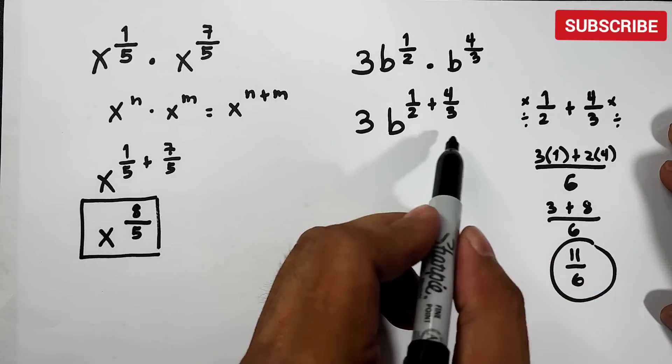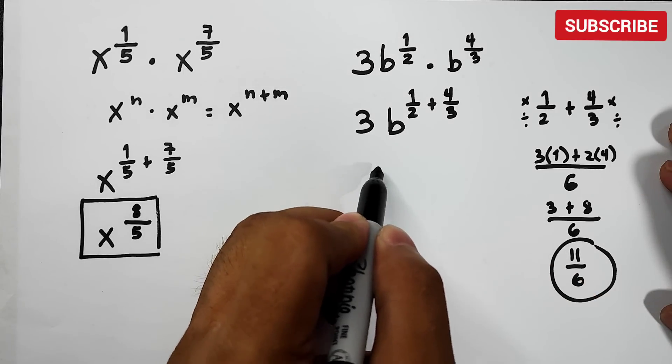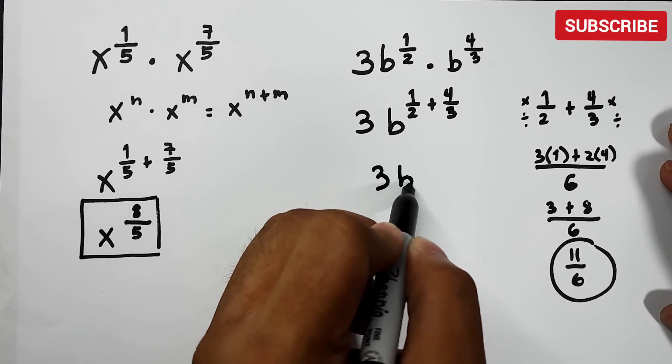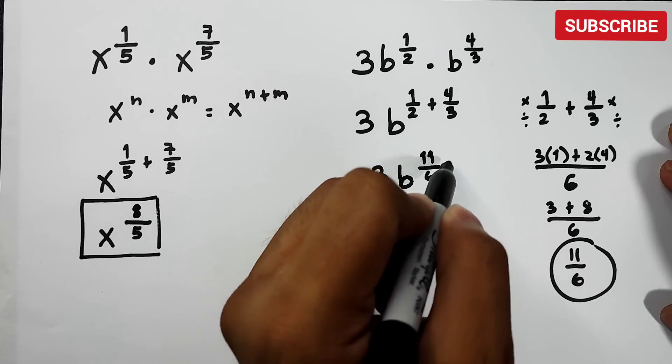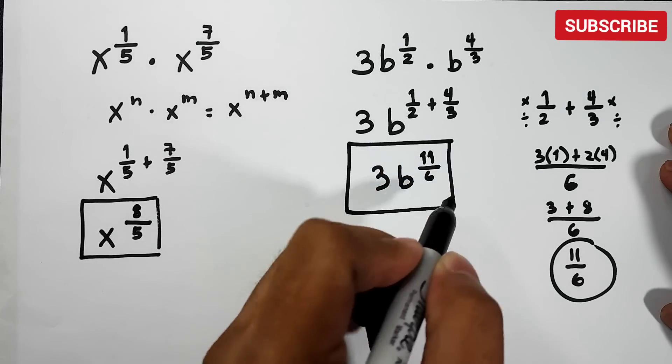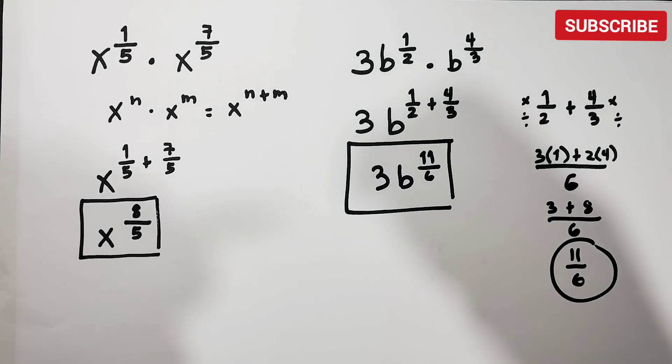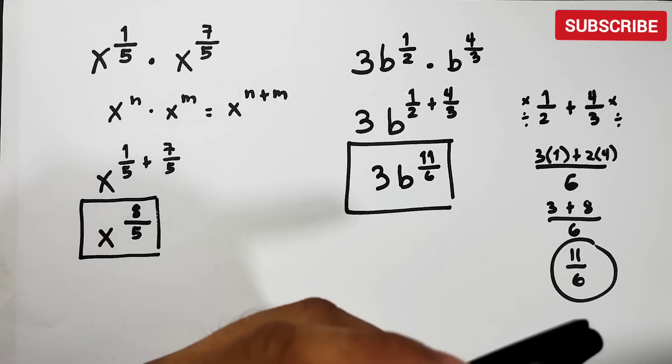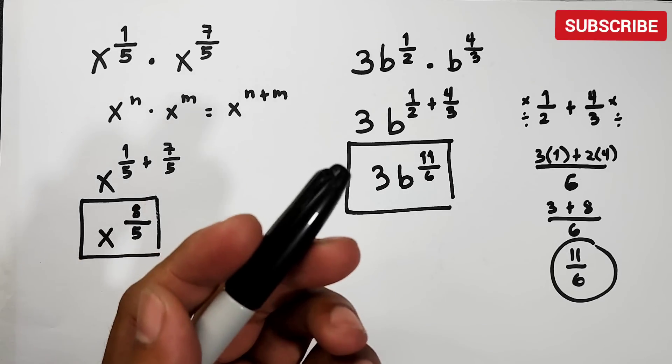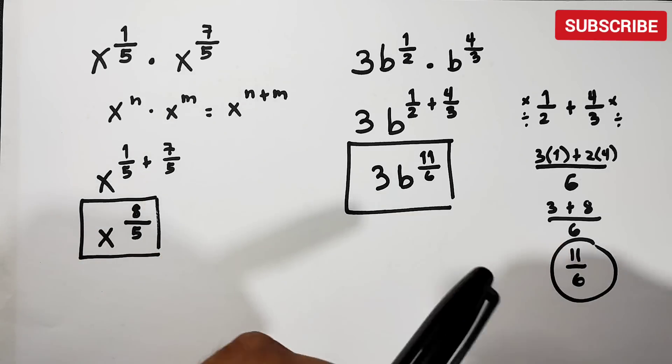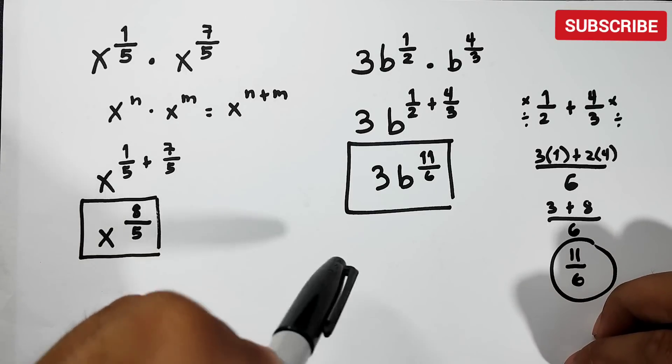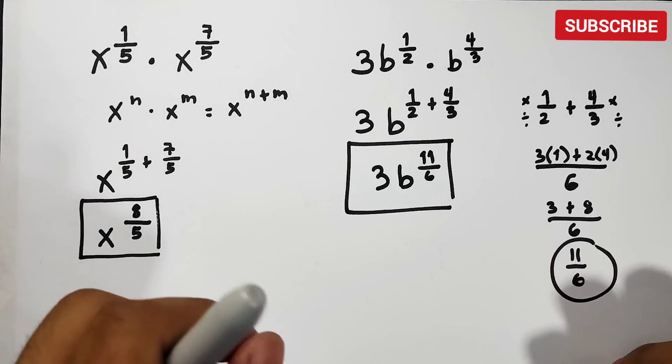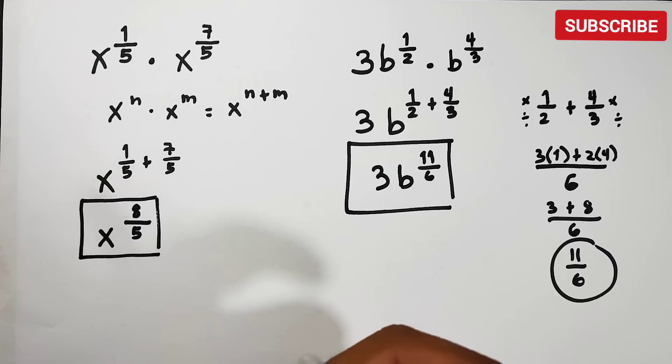And simplifying this fraction, this is 11 over 6. This now is the exponent. Meaning the answer here is simply 3b raised to 11 over 6. So that's how it is, simply guys. The struggle you'll have here is acknowledging the laws of exponents, and at the same time if you have difficulty adding or subtracting fractions. That will be your struggle here, but if you're okay with that, don't worry about this.